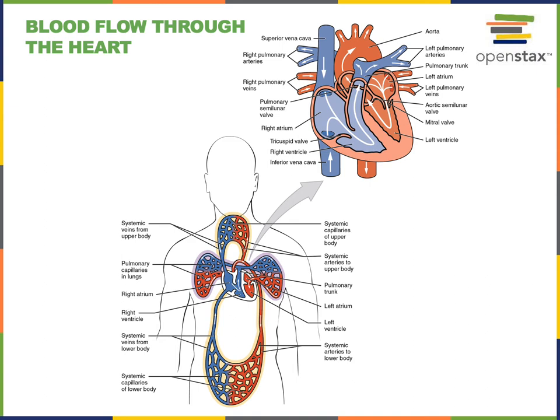The pulmonary circuit starts with blood flowing out of the right ventricle into the pulmonary trunk. The pulmonary trunk branches into the pulmonary arteries. The left pulmonary artery carries blood to the left lung, and the right pulmonary artery carries blood to the right lung.